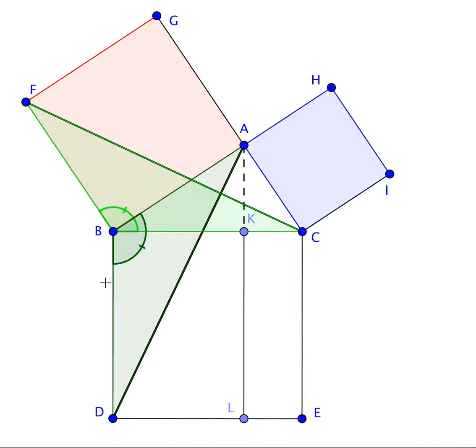Since AKL is a straight line parallel to BD, then the rectangle BDLK has twice the area of the triangle ABD because they share the same base BD and a line normal to their common base connecting the parallel lines BD and AL.